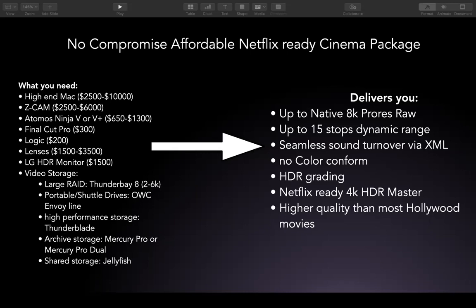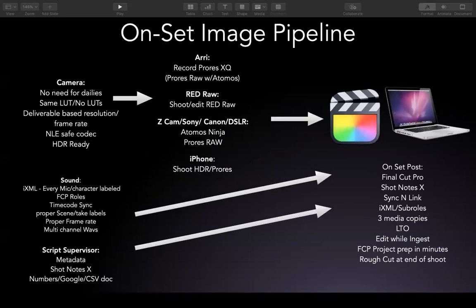What you're going to get out of this: native 8K ProRes RAW up to 15 stops of dynamic range, seamless sound turnover via XML, no color conform — you stay with your original media the entire time — and you can even finish HDR right within Final Cut. It's Netflix-ready for a 4K HDR master, and it's higher quality than most Hollywood movies, which believe it or not are still finished in 2K.